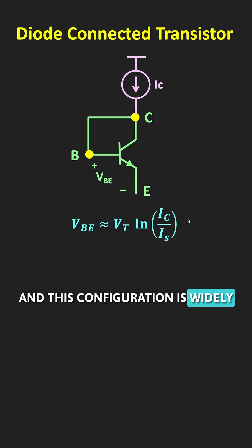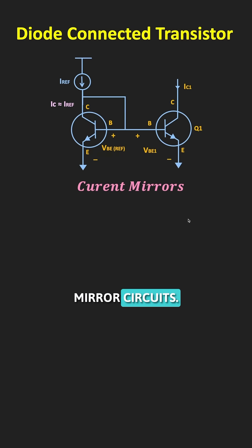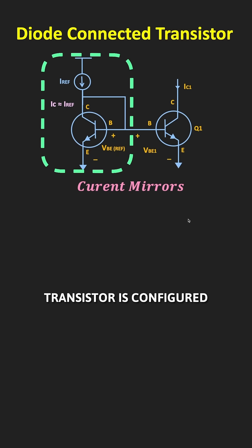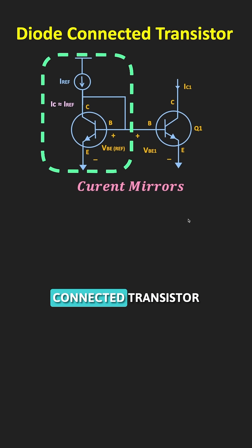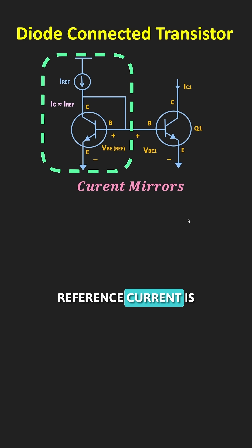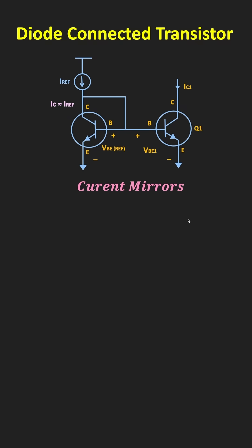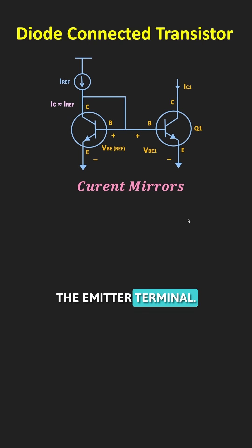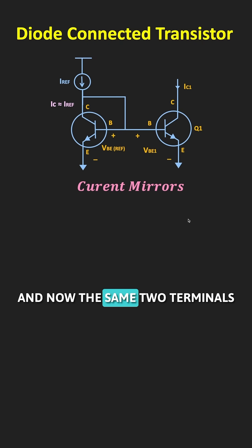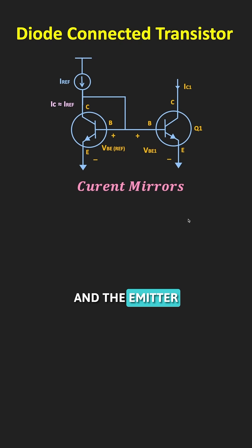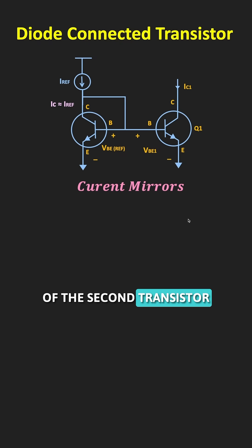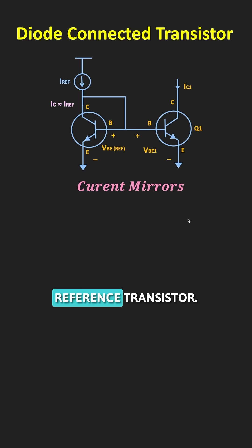This configuration is widely used in current mirror circuits. In current mirrors, the reference transistor is configured as the diode-connected transistor, and some constant reference current passes through the collector terminal. Because of that, we get a voltage VBE across the base and emitter terminals, and the same two terminals are connected to the base and emitter of the second transistor.